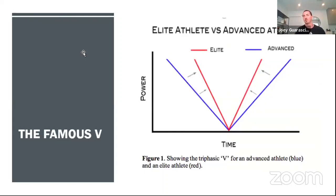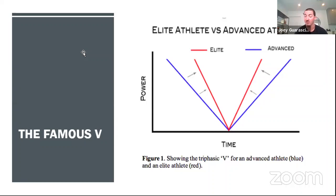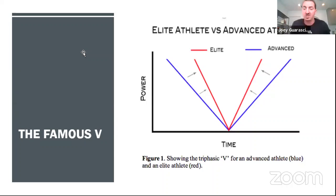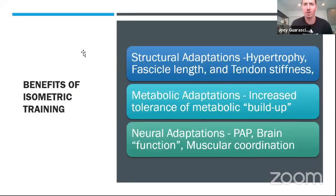This is the famous V from Triphasic Training — the concept that elite athletes move through these three muscle coordinations at a much steeper and faster rate than even advanced athletes. The eccentric phase is much sharper, the isometric phase is able to transmit forces to concentric action. So we're able to absorb force, hold onto it, and then redistribute it in a way that's propulsive in nature.